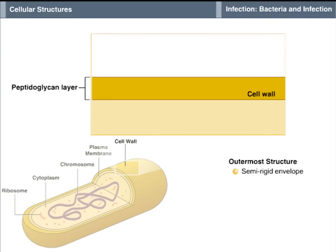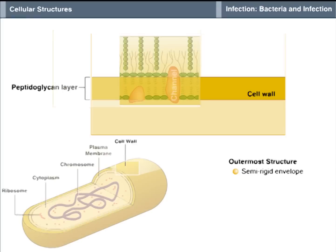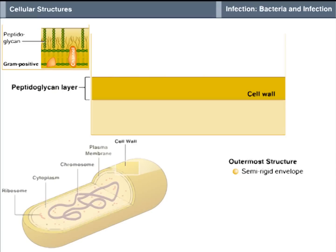Bacteria can be divided into two main groups based on differences in their cell wall structure. These differences were first noticed as differences in staining with a dye called Gram's stain. Gram-positive organisms have the structure defined so far.